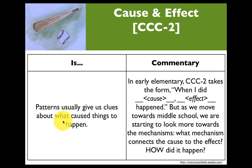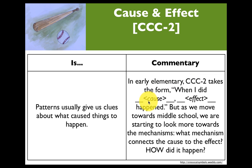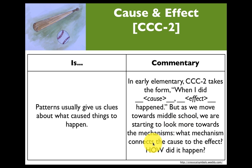Patterns usually give us clues about what caused things to happen — so cause and effect. In early elementary, the cause and effect cross-cutting concept takes the form: when I did something, something else happened. It's kind of correlational. But as we move towards middle school, we're starting to look at the mechanisms — what mechanism connects the cause to the effect? How did it happen? Upper elementary is a transition and a bridge between the two.